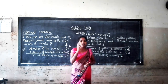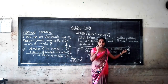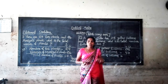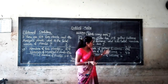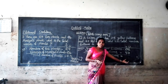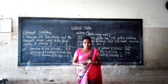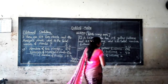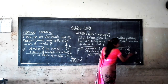Firstly we add the unit place numbers. Here in 38, there are 3 tens and 8 units. In 43, there are 4 tens and 3 units. The unit place numbers are 8 and 3. 8 plus 3 equals 11.